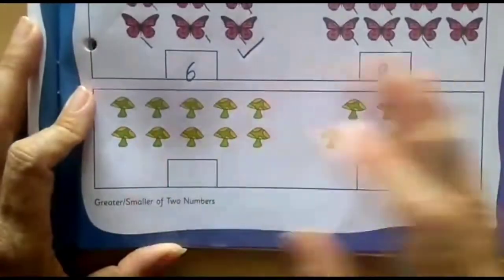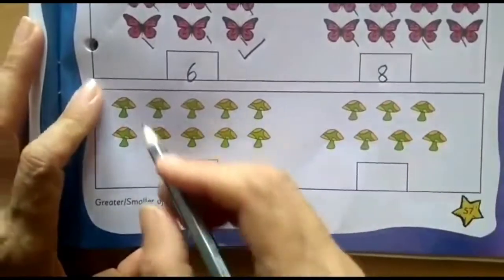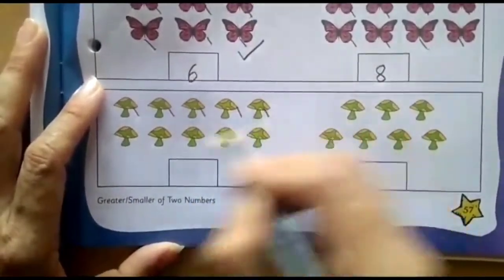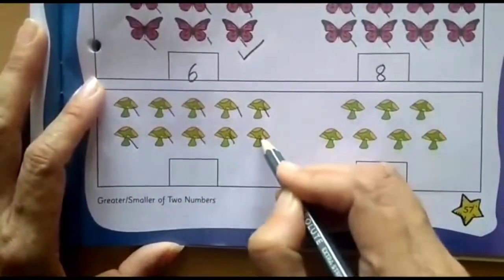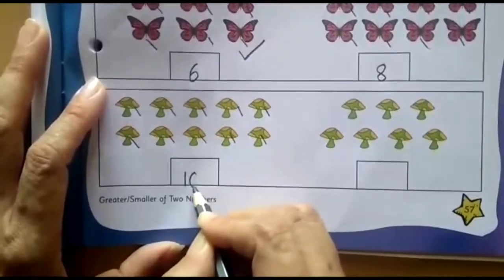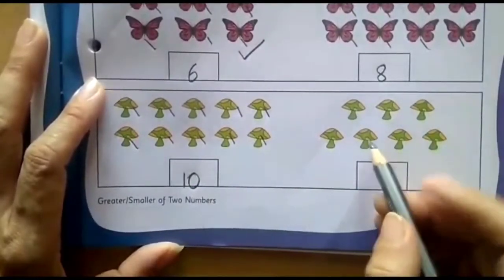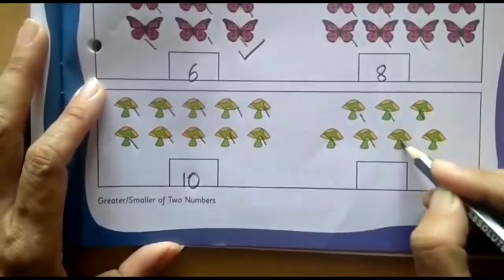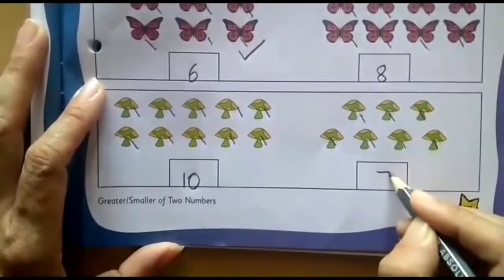Let's start counting here also. Mushrooms are really colorful. Let's begin. 1, 2, 3, 4, 5, 6, 7, 8 and 9 and 10. So here which number will come? Number 10. And here how many mushrooms? 1, 2, 3, 4, 5, 6, 7. So here number 7.